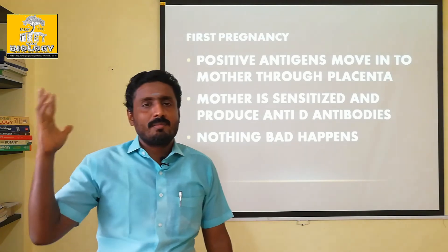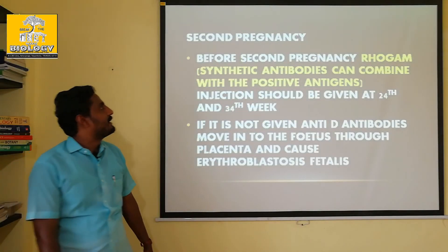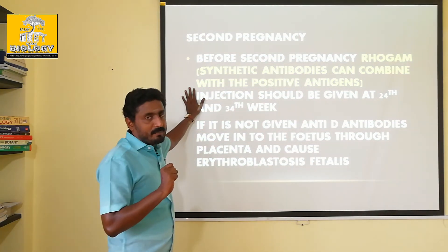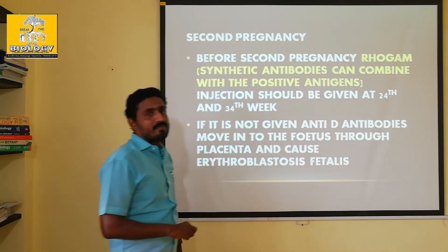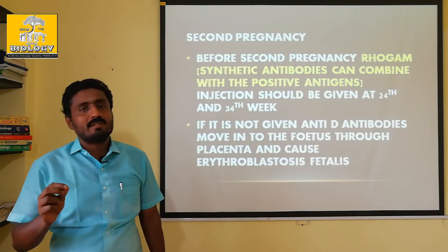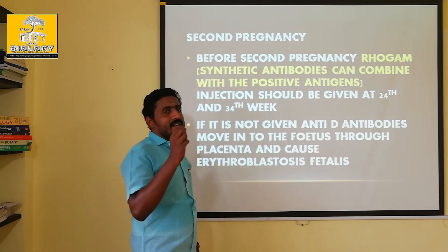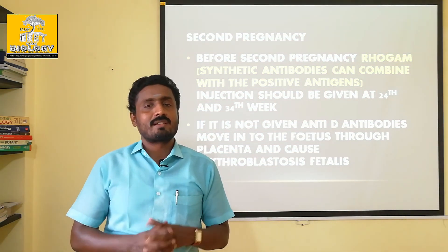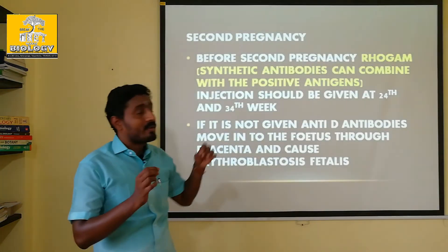However, those anti-D antibodies remain in the mother's own body. During the second pregnancy, if the baby again has a positive blood group, the immune system reacts rapidly. The antigen from the second baby enters the mother's bloodstream, and because antibodies were already produced from the first pregnancy, the immune system immediately responds with IgG antibodies.